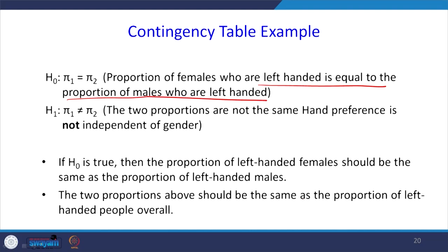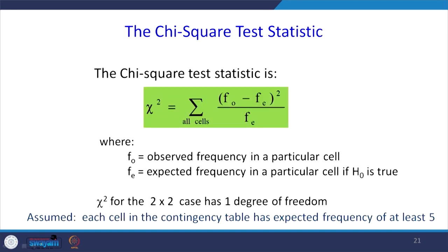Instead of taking left hand as reference, you can take right hand — the result will be the same. The chi-square test statistic is Σ[(F_O − F_E)² / F_E], where F_O is observed frequency and F_E is expected frequency. For a 2×2 table, the degrees of freedom is (2−1)(2−1) = 1. An important assumption is that each cell in the contingency table must have an expected frequency of at least 5.